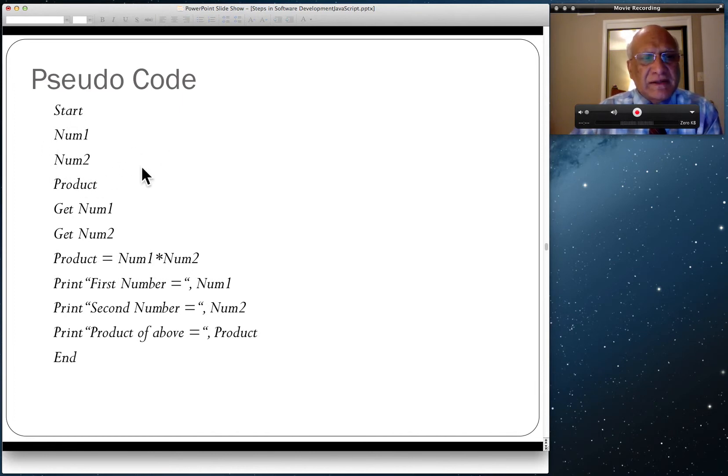Then there was a parallelogram saying Get Num1, so we get that. There's another parallelogram Get Num2, so we get that. Then this was inside a rectangle: Product equals Num1 times Num2, as is.